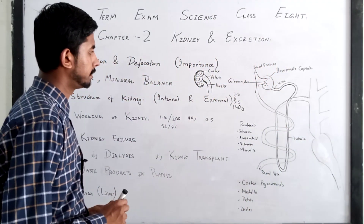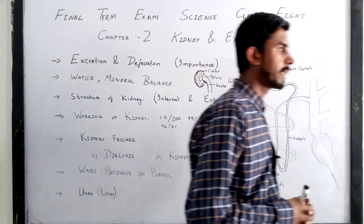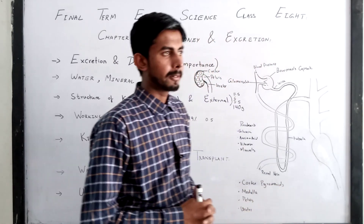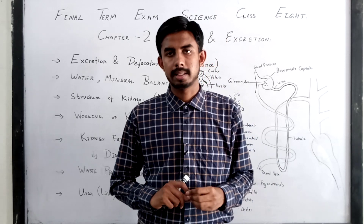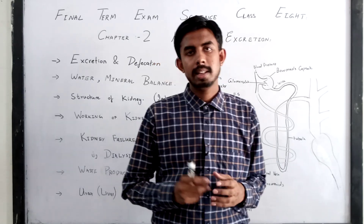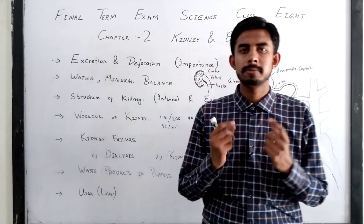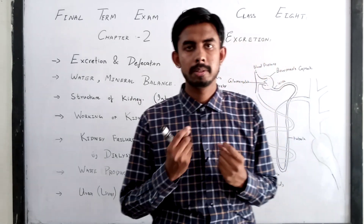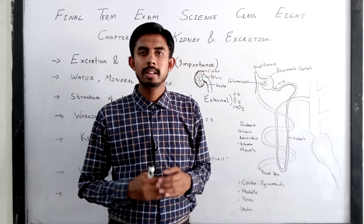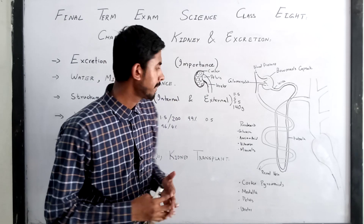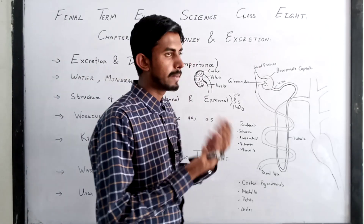Now, how does the kidney work? In one day, about 200 liters of blood pass through the kidney. From this, 99% of the blood is cleaned and returned for the body to use. Only about 1.5 liters of unwanted water, urea, and different chemicals are removed in a day, and 99% of the blood is returned to the body.